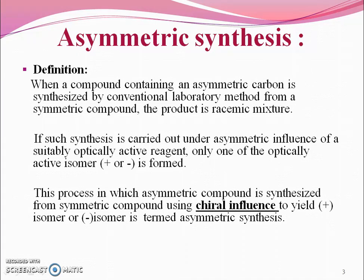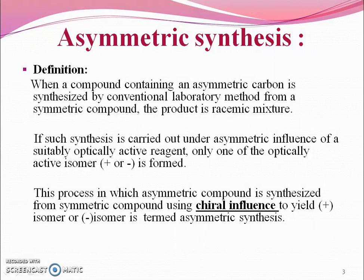When a compound containing an asymmetric carbon is synthesized by conventional laboratory method from an asymmetric compound, the product is a racemic mixture. If such a synthesis is carried out under asymmetric influence of a suitably optically active reagent, only one of the active isomers, that is plus or minus, is formed. This process in which an asymmetric compound is synthesized from an asymmetric compound using a chiral influence to yield the plus dextro isomer or minus, that is levo isomer, is termed as asymmetric synthesis.